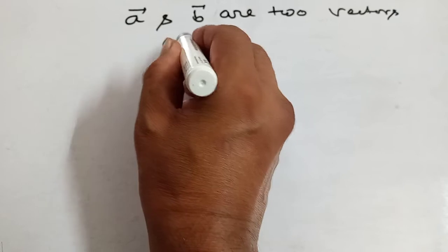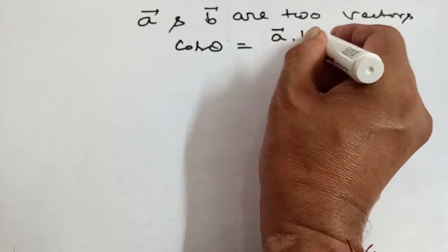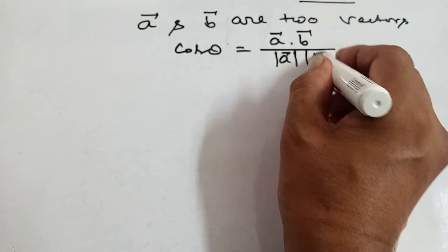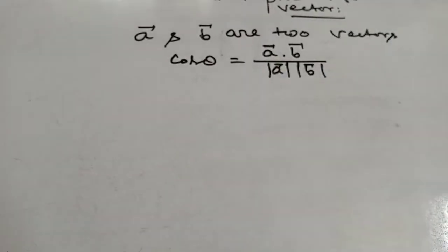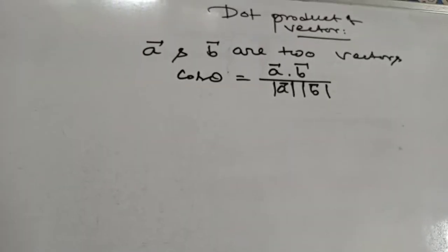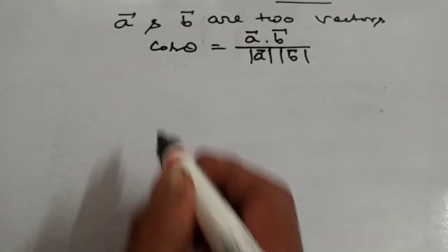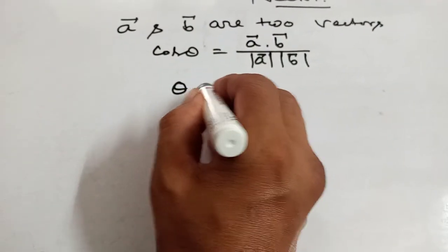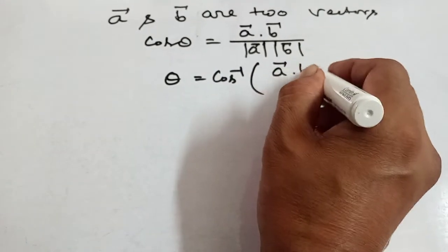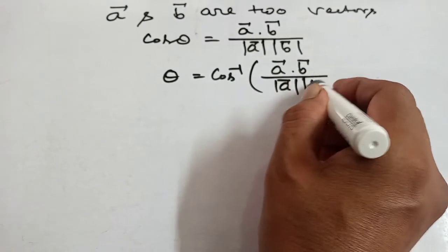Then cos theta equals to a vector dot b vector, divided by mod of a vector and mod of b vector. From here you can write theta equal to cos inverse of a vector dot b vector, divided by mod of a vector into mod of b vector.